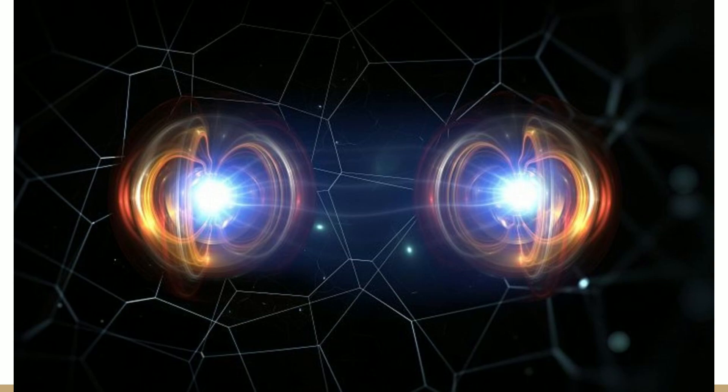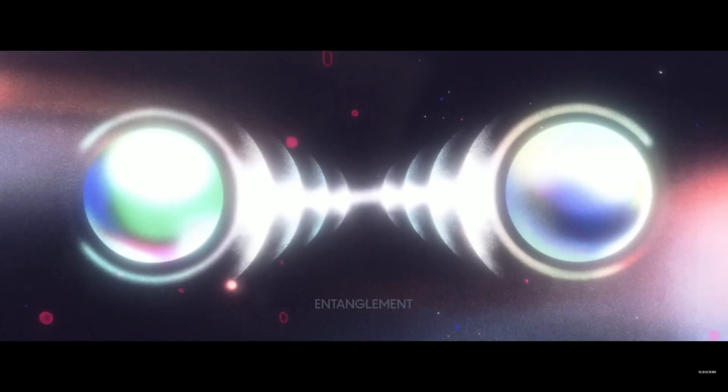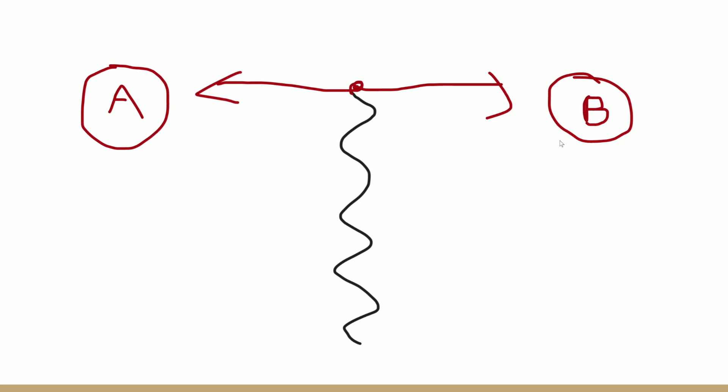If particle A was measured to be spin up and it was thousands of light years away from particle B, particle B would instantaneously know that it has to have a spin pointing down. This is one of the mysteries of quantum mechanics that people are still trying to figure out today. But this property is exactly what was used to model the hypothetical wormhole in the quantum computer.